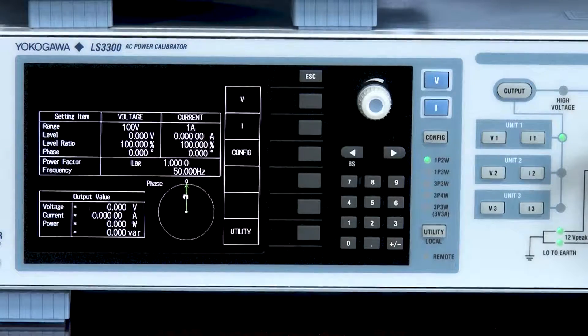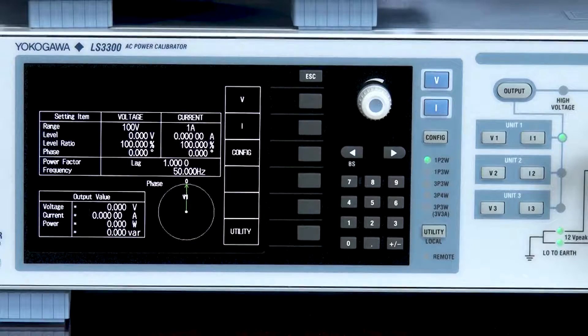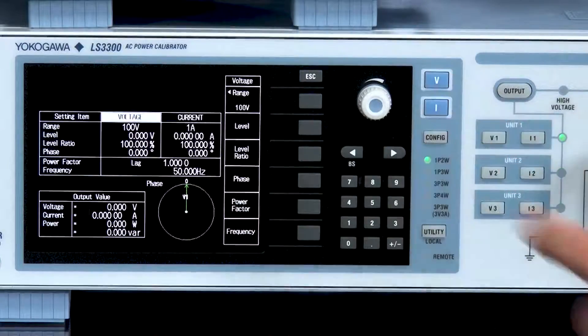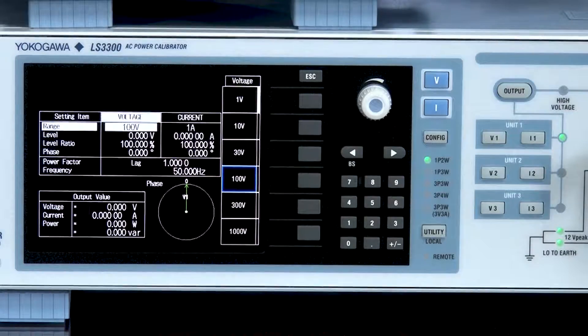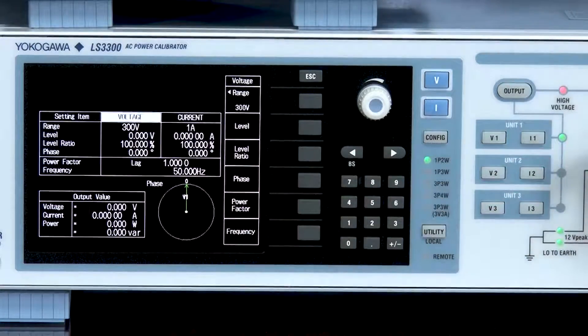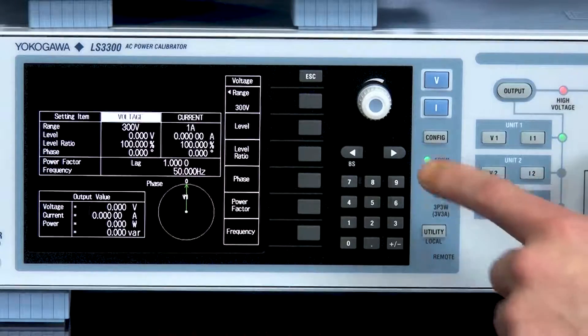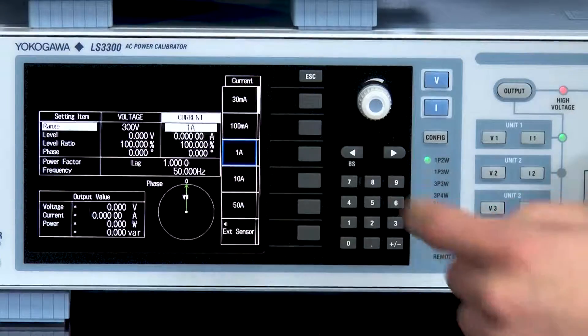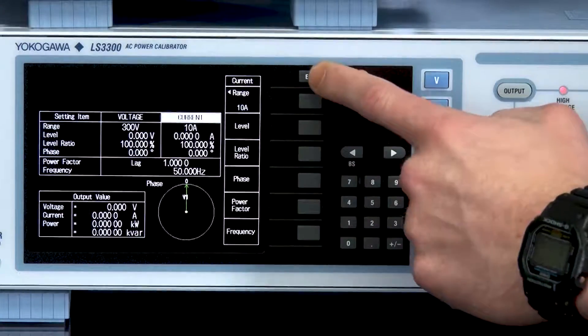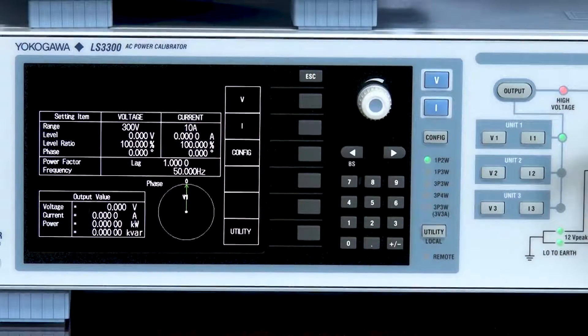Next step would be to set the voltage and current ranges. To set the voltage range I'll press the voltage button followed by select range, and then for this test we will use 300 volts. Similarly for current, I will select the current button, select range. Next I will select 10 amps for this test and then we can exit back out to the main menu.